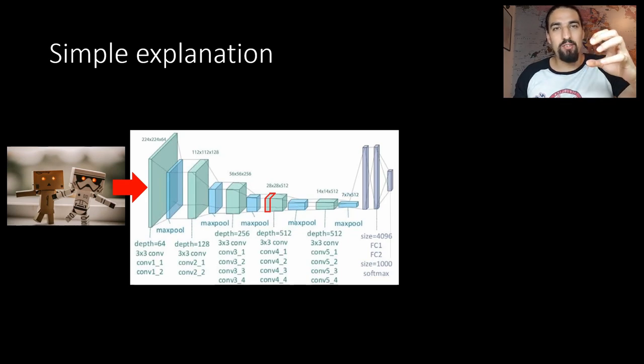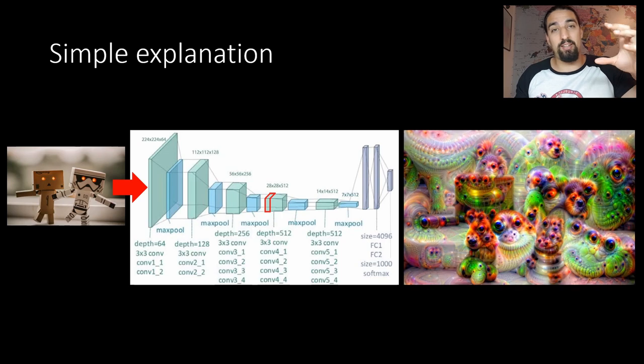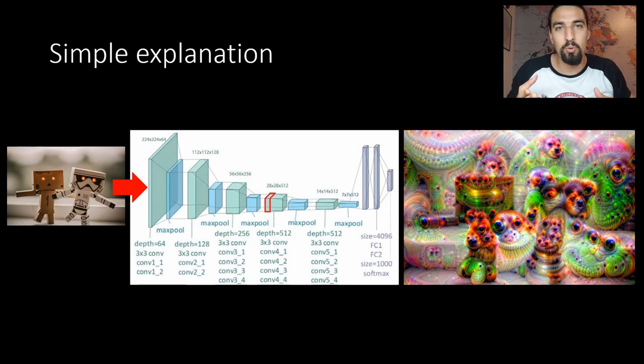You pass in the input image and feed it through to a certain layer. When you come to a certain layer, whatever activations you have there, you want to amplify them and you do that by doing gradient ascent and not descent.